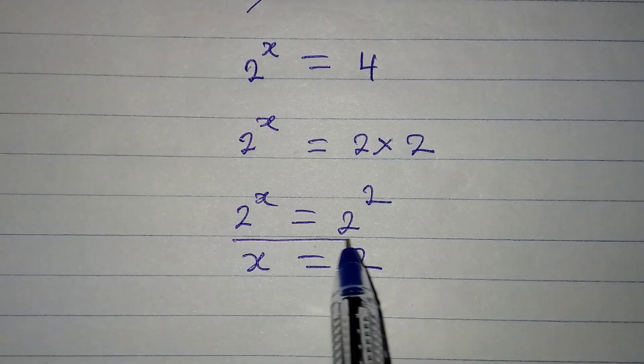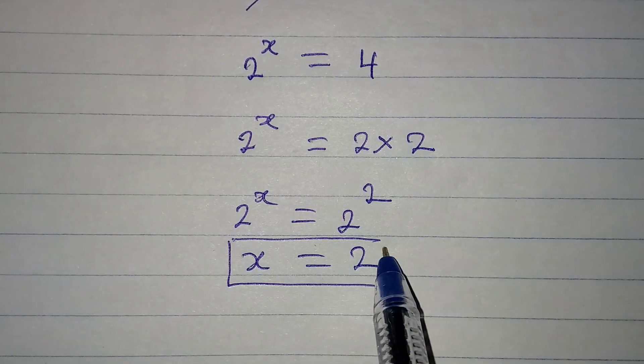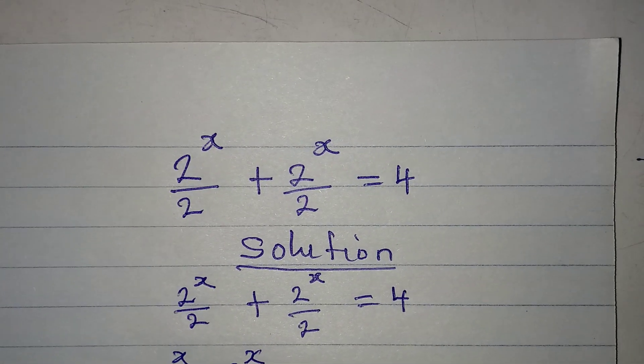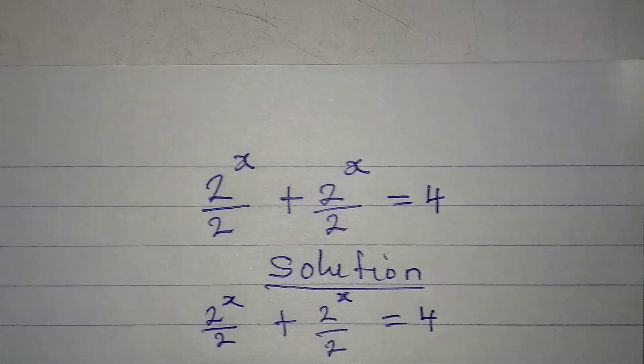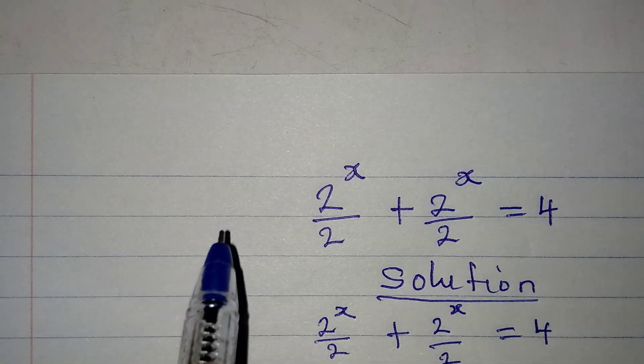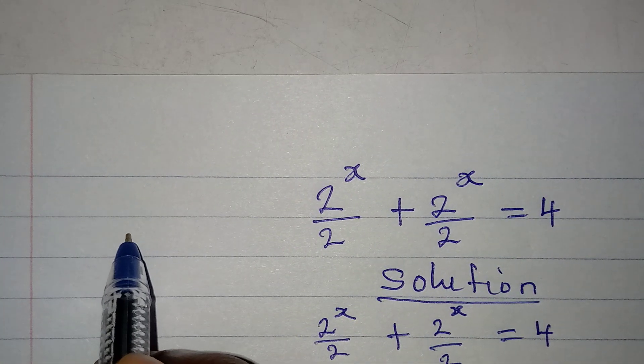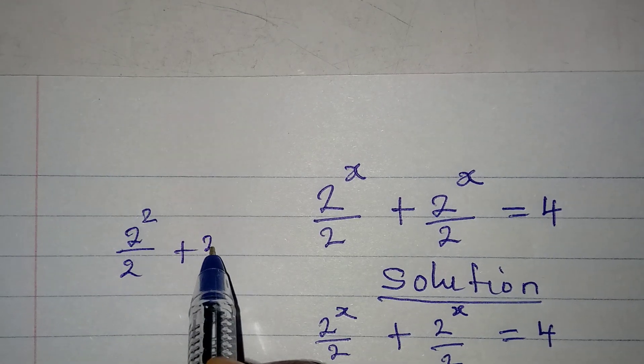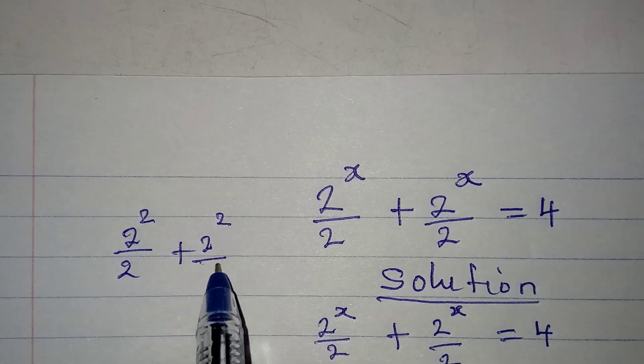Now let's go back to the original equation and put in the value of x. If we put in the value of x, I'm going to have 2^(2/2) + 2^(2/2).